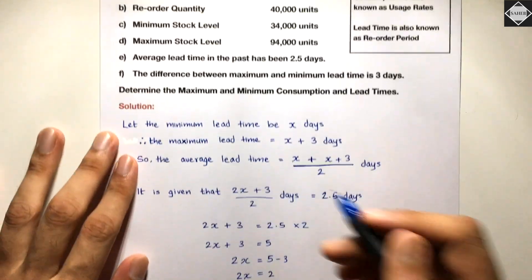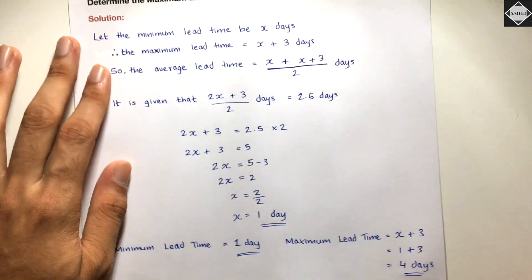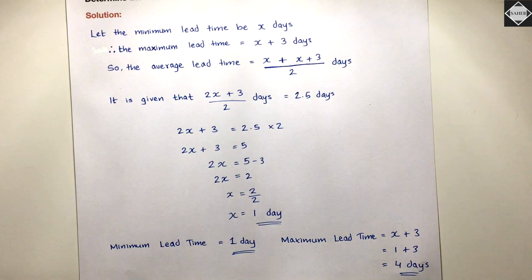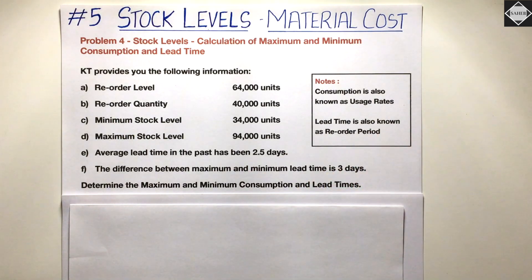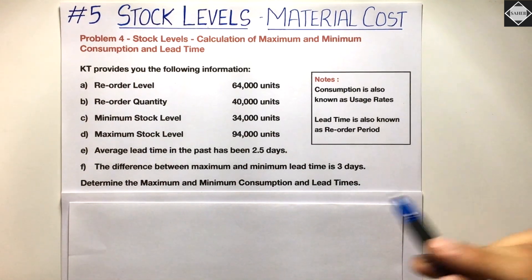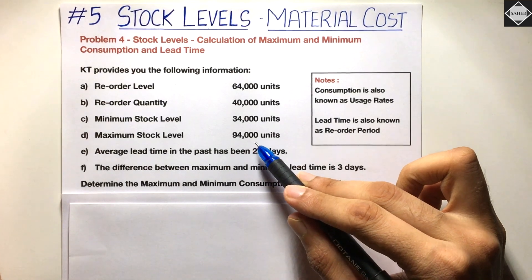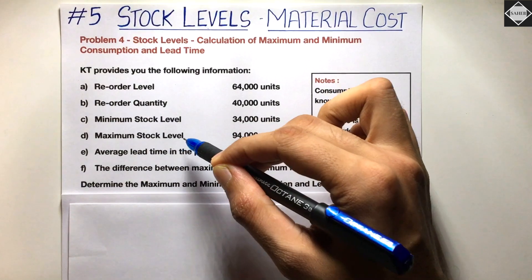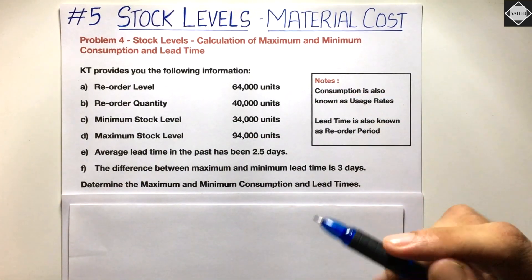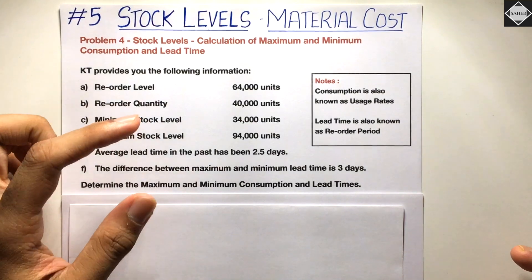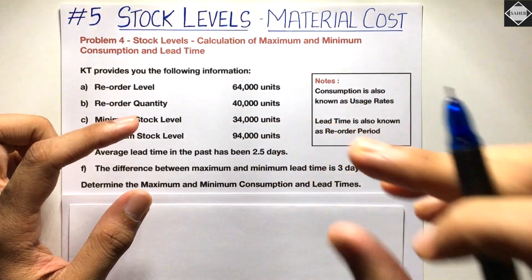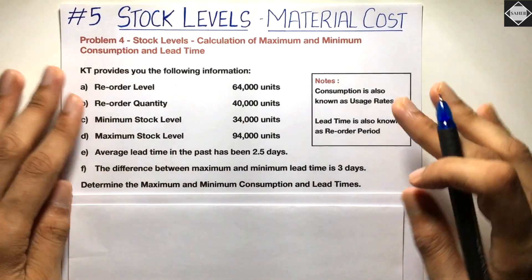Now let's calculate maximum and minimum consumption. Looking at the given data, we have maximum stock level = 94,000 units. The formula for maximum stock level is: reorder level + reorder quantity − (minimum consumption × minimum lead time). Since minimum consumption is in this formula, we can rearrange and solve for it.